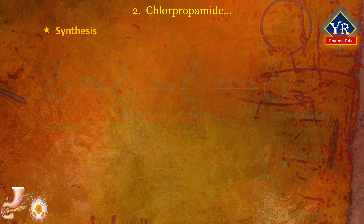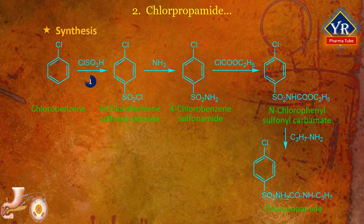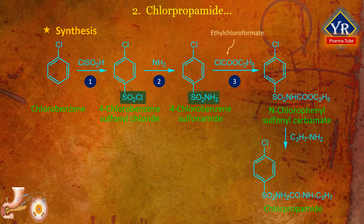The synthesis of chlorpropamide involves four steps. In the first step, chlorobenzene reacts with chlorosulfonic acid to yield 4-chlorobenzene sulfonyl chloride. In the second step, the 4-chlorobenzene sulfonyl chloride is aminated with liquid ammonia to convert the sulfonyl chloride moiety to a sulfonamide moiety to form 4-chlorobenzene sulfonamide. In the third step, the sulfonamide is refluxed with ethyl chloroformate to produce N-(4-chlorophenyl sulfonyl) carbamide. And in the last step, the carbamide upon condensation with N-propylamine yields the desired chlorpropamide.